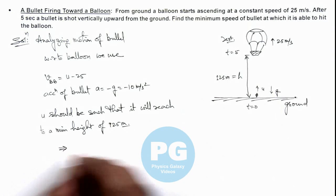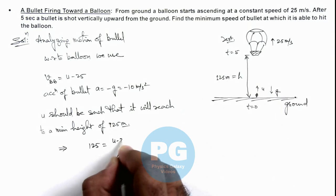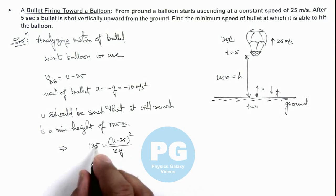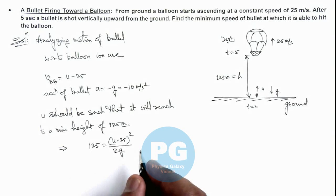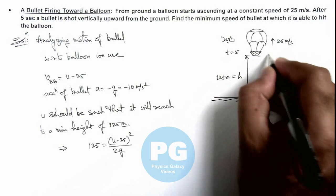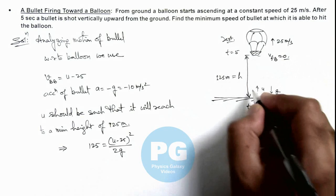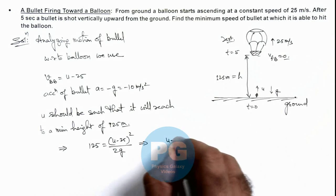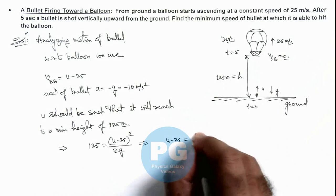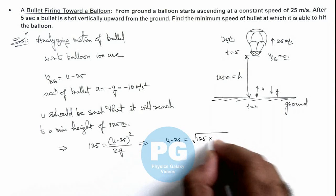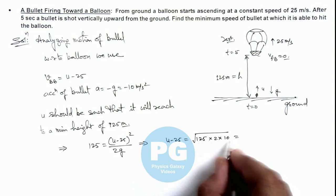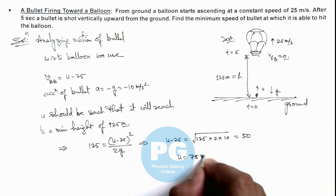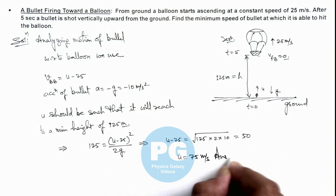This implies we can write 125 equals (u minus 25) squared divided by 2g. As distance is v squared by 2a, I am using the same result, so that the final speed of bullet I am taking as zero if it just hits the balloon. This implies u minus 25 is equal to square root of 125 multiplied by 2g. So this will be square root of 2500, which is 50. So u can be taken as 75 meters per second, which is our final result of this problem.